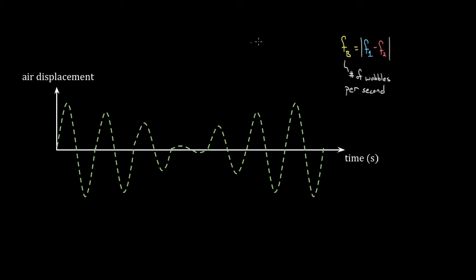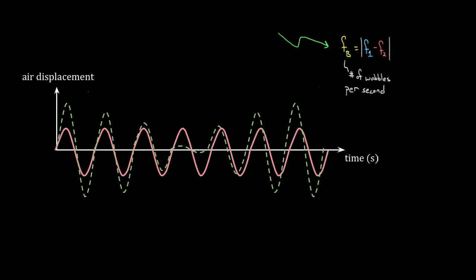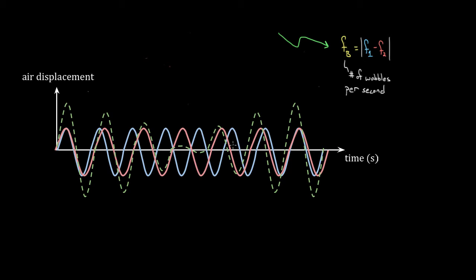What's up, everybody? In this video, I want to derive this formula right here. This is the formula for beat frequency. The way you get beats, or beat frequency, is by overlapping two waves that have different frequencies. When you do this, you get beats — and I'm not talking about Dr. Dre beats. These are a little less exciting.